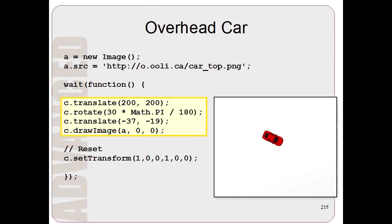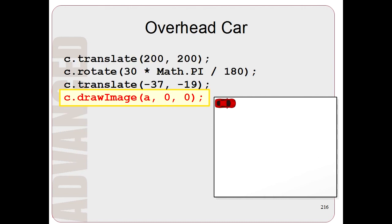So how do these commands work? Again, you just go through the steps backwards. So first, the last step is draw image. So let's draw the image. And we have the car where we want it here.